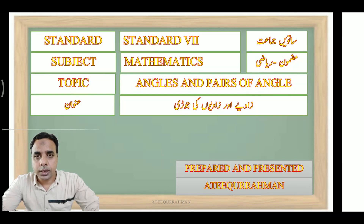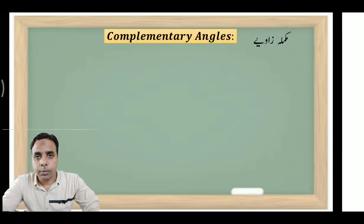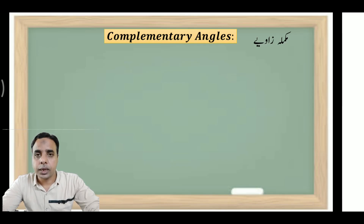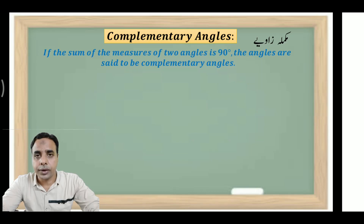Aaj ke session mein bacho hum yaan par khas taur par aapko batayenge complementary angles ke baare mein aur supplementary angles ke baare mein — yaani ki mukammala zawiyya ke baare mein. When the sum of the measures of two angles is 90 degrees, the angles are said to be complementary angles.